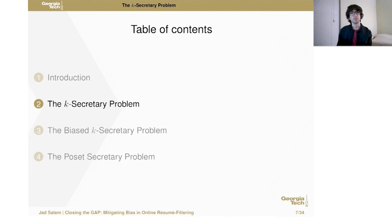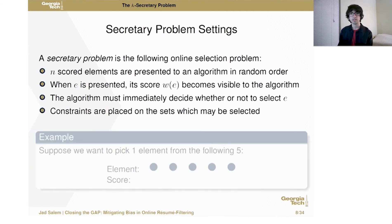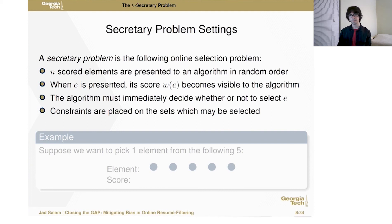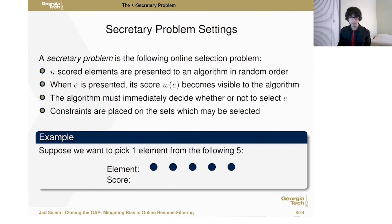Now I'll introduce the theoretical framework we use for online selection: the secretary problem. This is a classical problem in theoretical computer science where N elements are presented to an algorithm one by one in random order. Each element reveals its weight when it arrives, and the algorithm must make an immediate and irrevocable decision on whether or not to select that element. There are typically cardinality constraints on the sets of elements that can be selected. Suppose we want to pick one element from five — they arrive one by one revealing their weights.